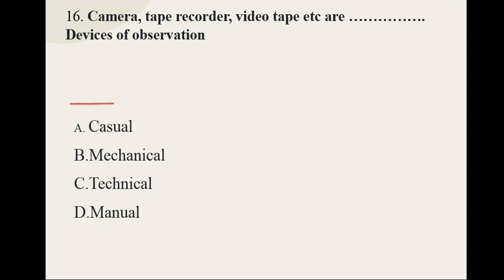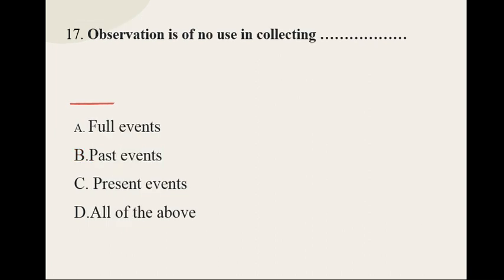Question number sixteen: Camera, tape recorder, video tape, etc. are dash devices of observation — options are casual, mechanical, technical, and manual — and the correct option is mechanical.